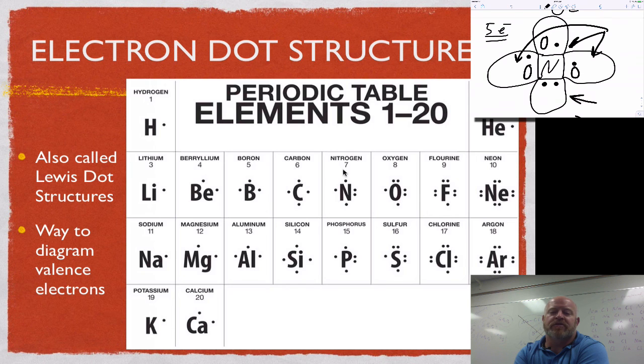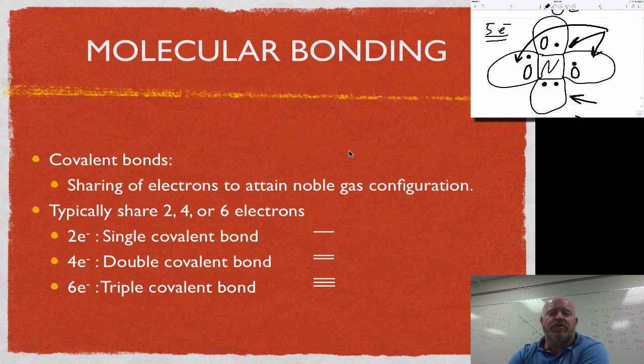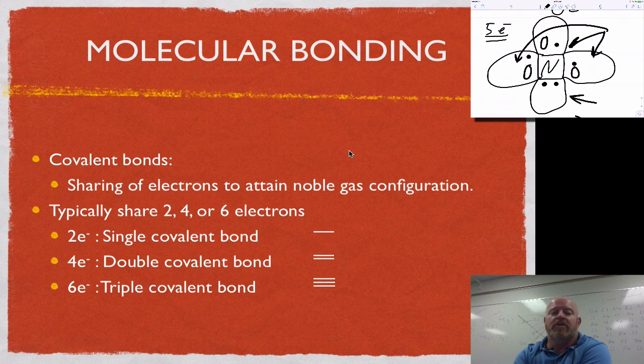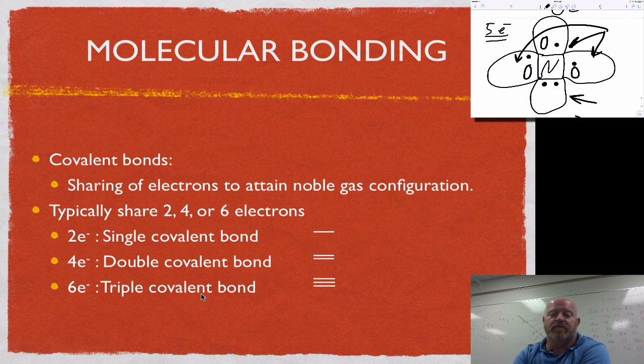The last thing we want to talk about is when you're doing this sharing of electrons, how do we represent that? To do that is through what we call a covalent bond. When we have covalent bonds, we can share either two, four, or six electrons. If you're going to share just two electrons, we call that a single covalent bond and represent that by a single line or bar. If you have four electrons being shared, we call that a double covalent bond and use two bars. If we have six, we call that a triple covalent bond and have three bars.